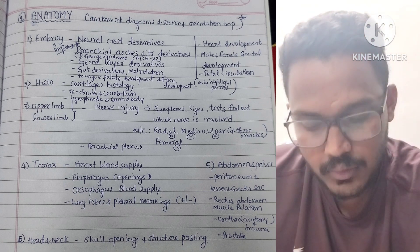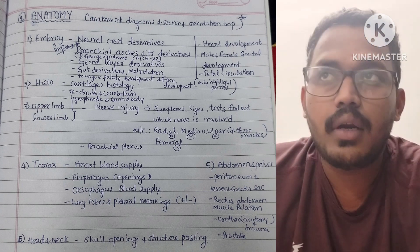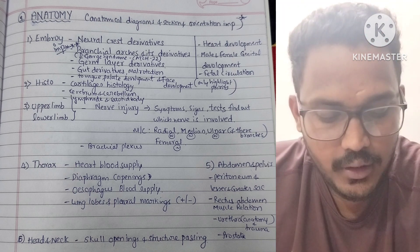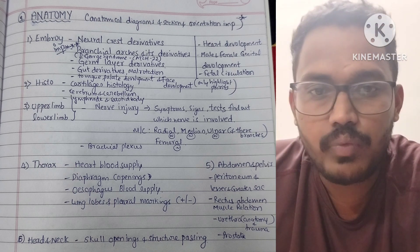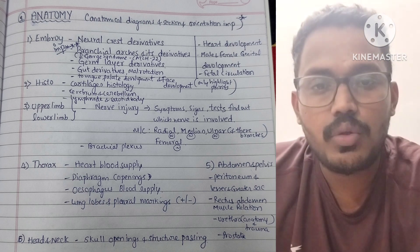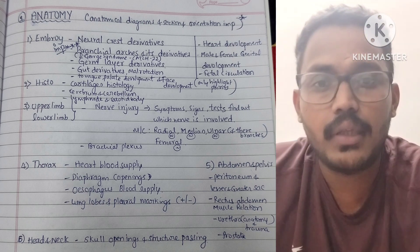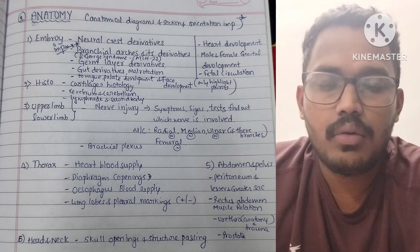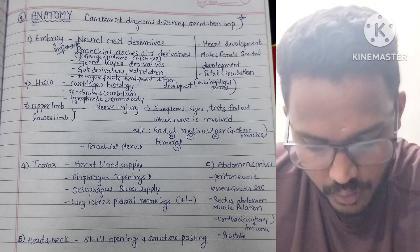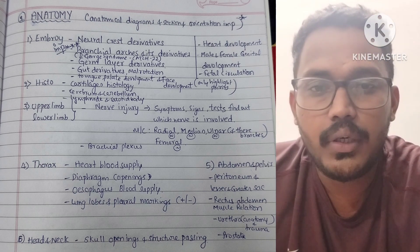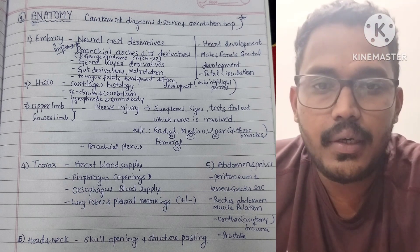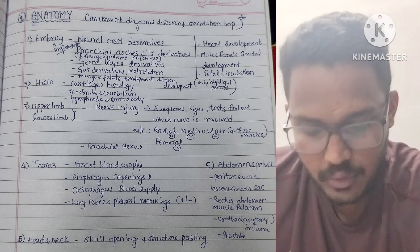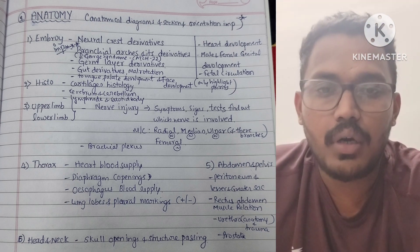In upper limb and lower limb, most questions are related to nerve injury, its symptoms and signs, and tests to find out which nerve is involved in which compartment. Nerve injuries are important. Commonly asked are radial nerve, median nerve, and ulnar nerve. In the lower limb, femoral nerve is very important. In the upper limb, the brachial plexus — its orientation, branches, cords, divisions, and neural lesions — are important.